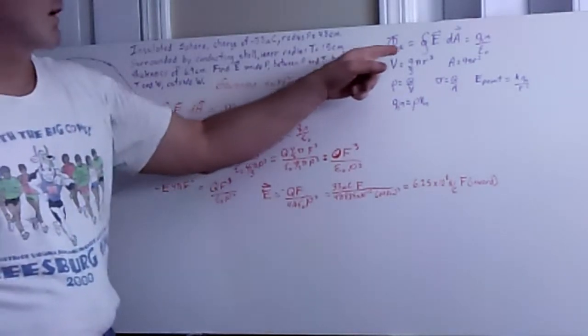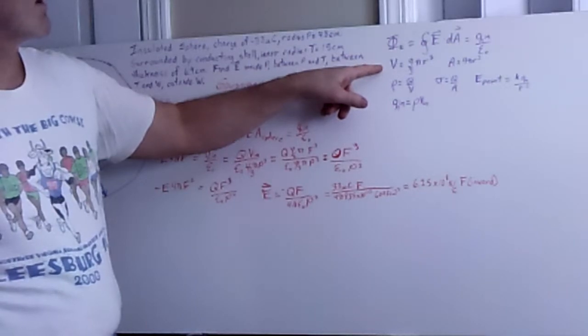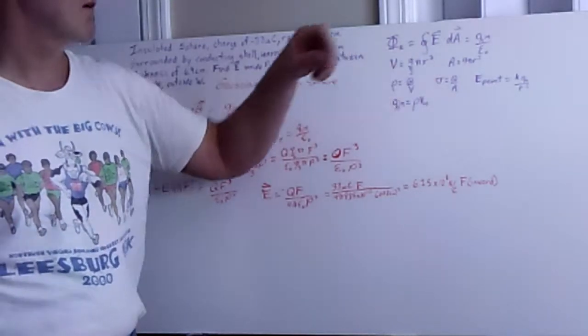And so we have to go ahead and use Gauss's Law, which is written up here. And we are going to need the volume of a sphere, 4 thirds pi r cubed, the area.